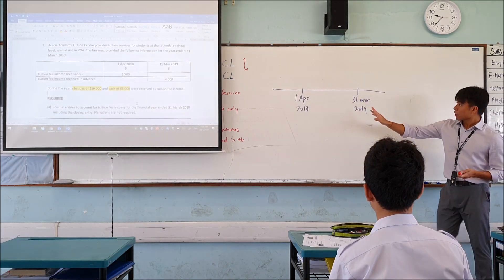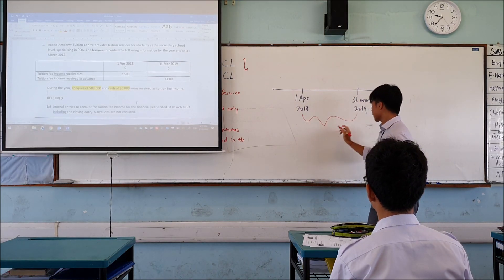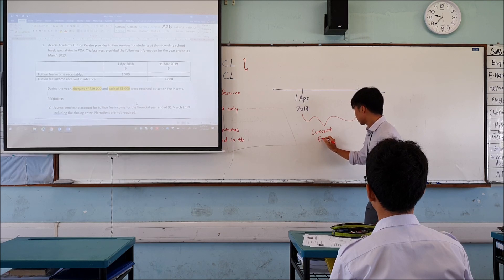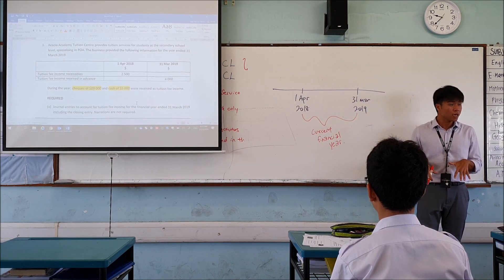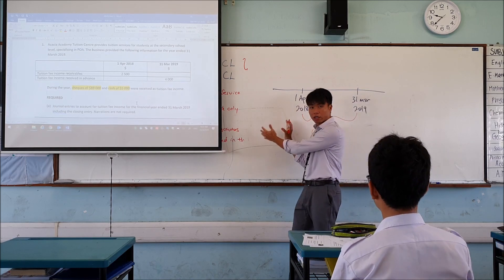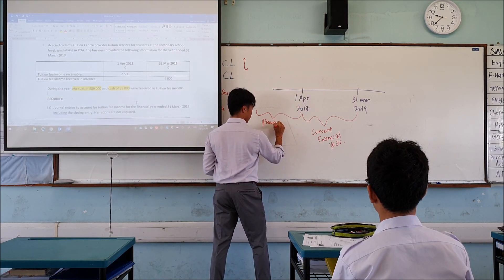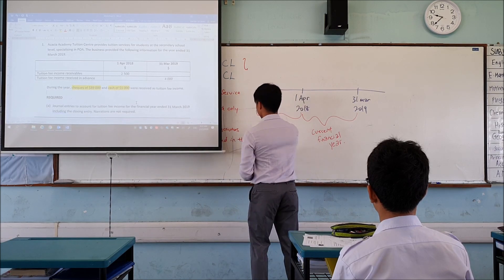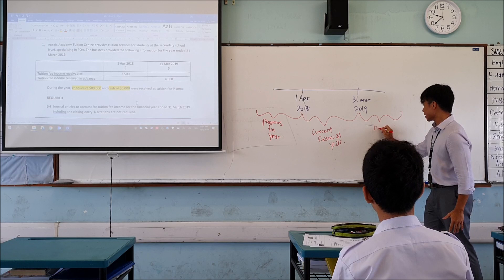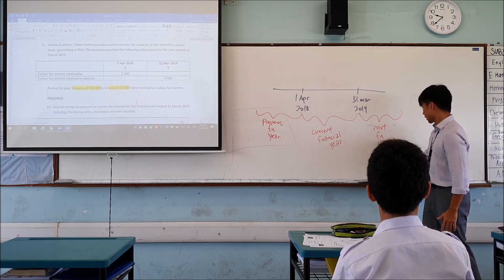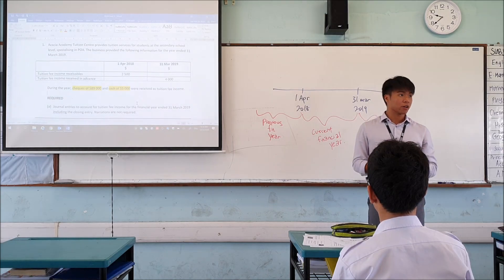This is the timeline. 1st of April 2018 is the start of your financial year, and your financial year ends on 31st March 2019 — this is your current financial year. What do we call the period before? The previous financial year. And the period after is the next financial year. This timeline will be very important for you to understand what all these numbers and accounts at the beginning and end stand for.